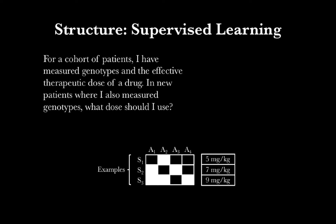So our samples are going to be the examples — each person is an example. Each allele, meaning every potential genotype, is a feature. And then our labels are made up of the doses that we've measured.